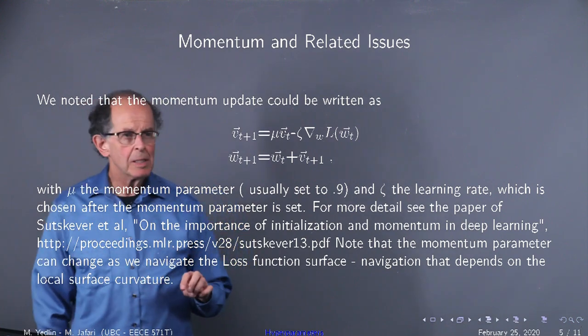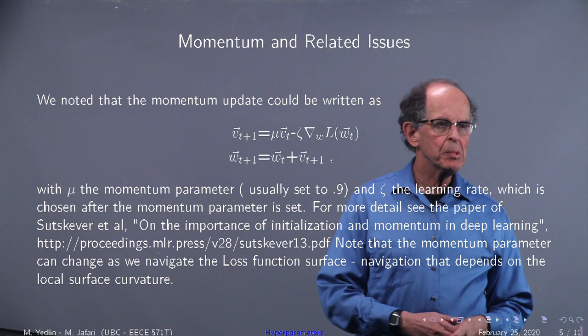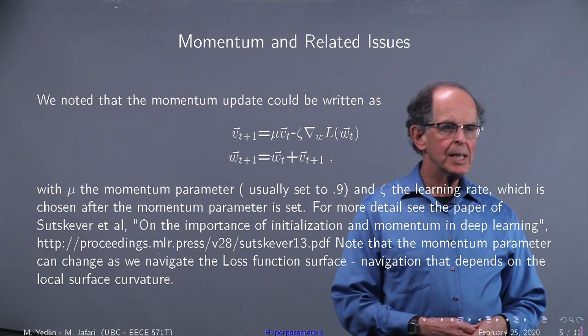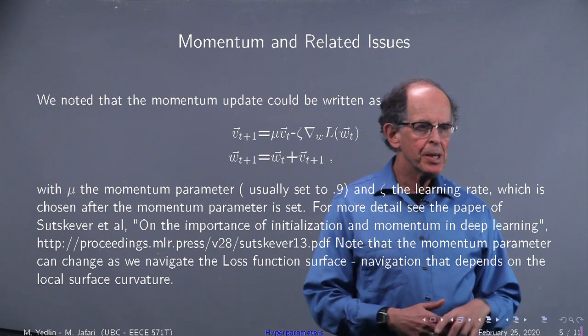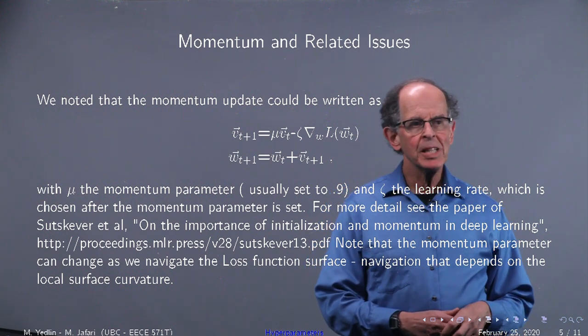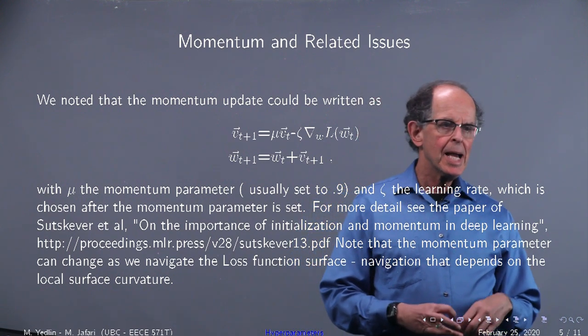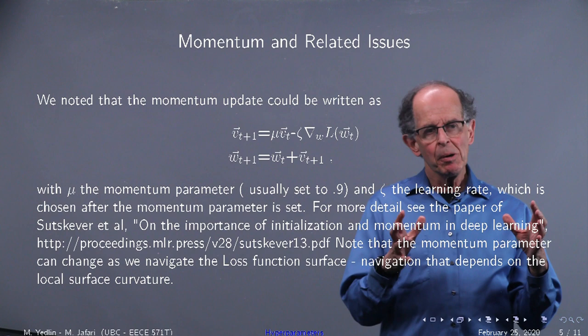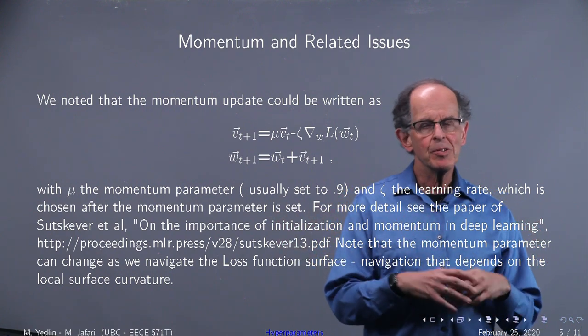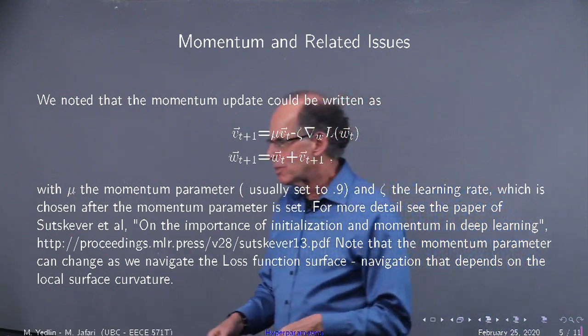Now let's look again at momentum. The momentum parameter is usually set to 0.9 and there's a great paper written by Sutskever et al on the importance of initialization and momentum in deep learning. Note that the momentum parameter can change as we navigate through the loss function surface. The navigation depends on the local surface curvature.